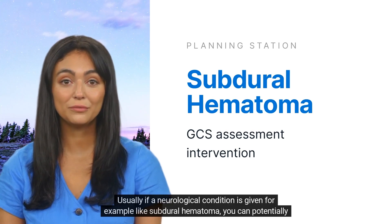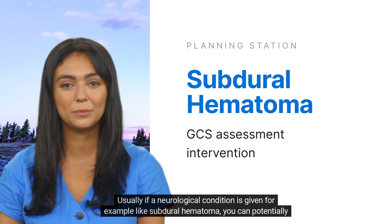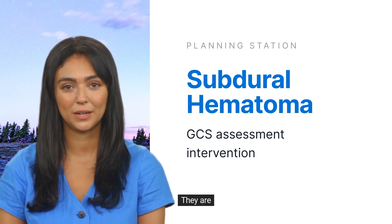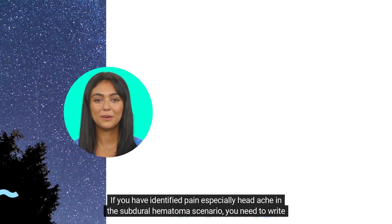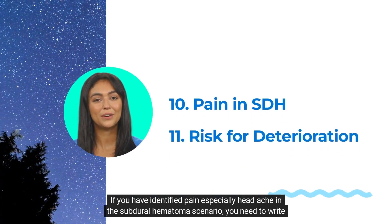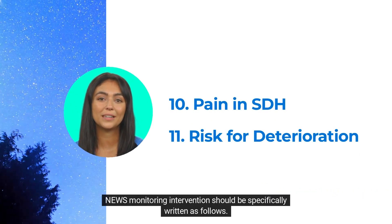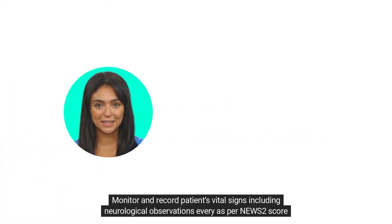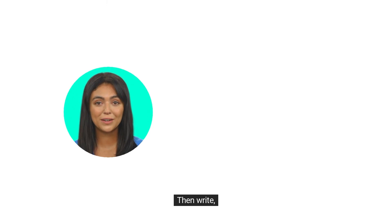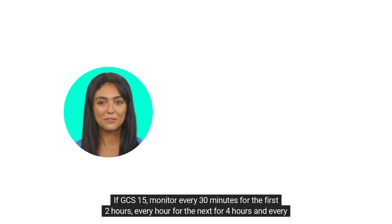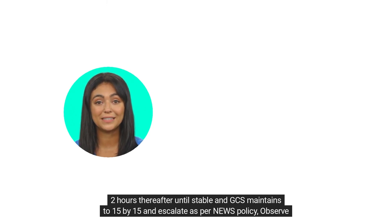Usually if a neurological condition is given — for example, subdural hematoma — you can potentially identify two nursing problems. If you have identified pain, especially headache, in the subdural hematoma scenario, you need to write the NEWS assessment intervention along with GCS assessment. The NEWS monitoring intervention should be specifically written as: monitor and record patient's vital signs including neurological observations every as per NEWS2 score, according to NEWS2 policy. Then write: if GCS 15, monitor every 30 minutes for the first two hours, every hour for the next four hours, and every two hours thereafter until stable, and GCS maintains to 15/15, and escalate as per NEWS policy.